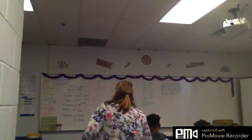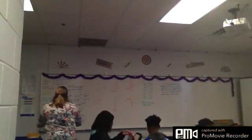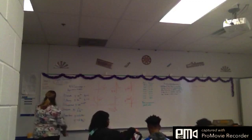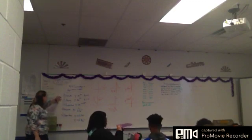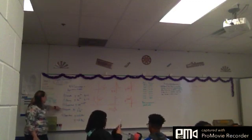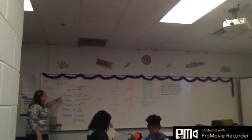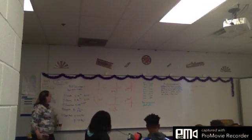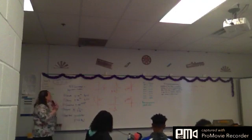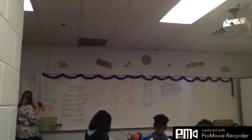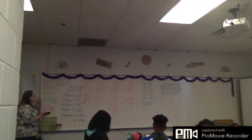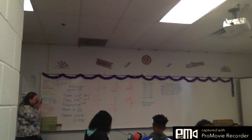Okay, so section four or five: exponential and logarithmic models. We have five models we're going to focus on: growth and decay, Gaussian, logistic, and logarithmic. Growth is simply y equals a times e to the bx. Decay has a negative exponent — that's how you get the difference.